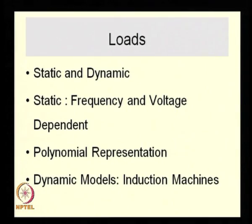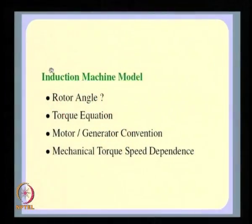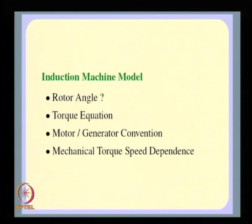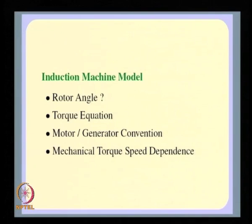In the previous class, the point at which we left off concerned some issues with induction machine models. Although the induction machine model can be obtained from the synchronous machine model, a few issues naturally come to mind. For example, what do you mean by rotor angle when there is really no saliency in the machine? You cannot align your axis to any particular direction with respect to the rotor because the rotor is exactly symmetrical. That was one issue we need to tackle.